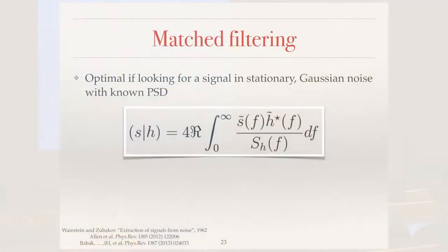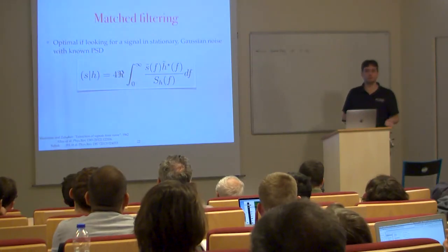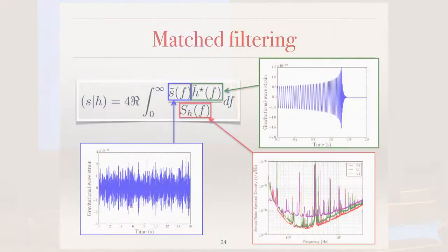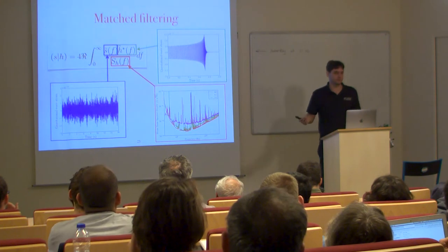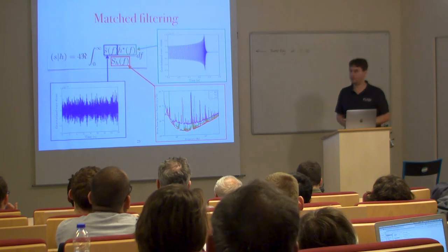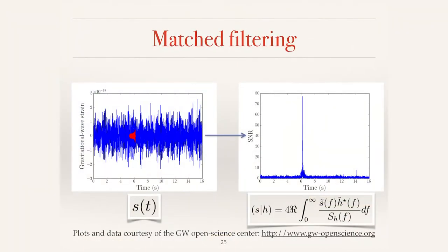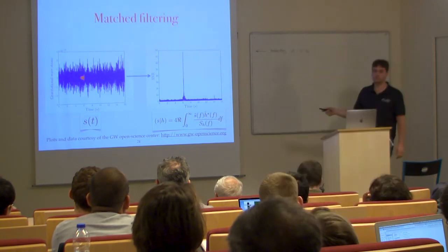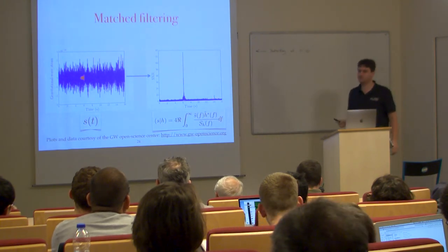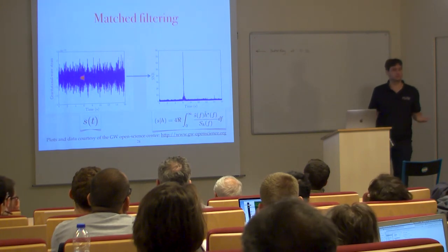This would be manageable if you knew exactly the signal and your data were Gaussian and stationary. As already explained, match filtering is the optimal method for looking for a known signal in stationary Gaussian noise with a known spectral density. You have your template, your data, and the noise curve — you simply multiply the template by the data weighted by the sensitivity as a function of frequency. It really is that simple. And if you do this as a function of time, you get a nice signal-to-noise ratio peak where the signal is.